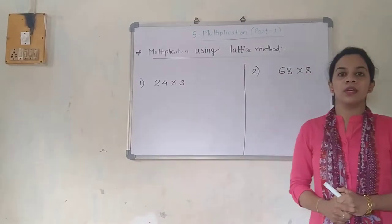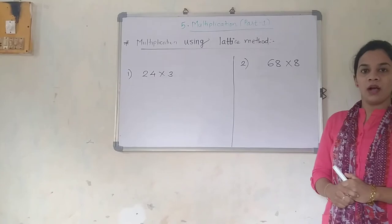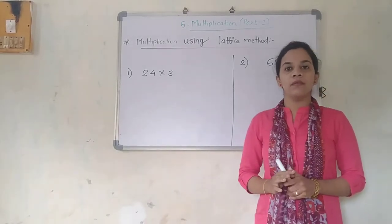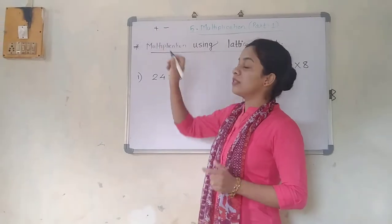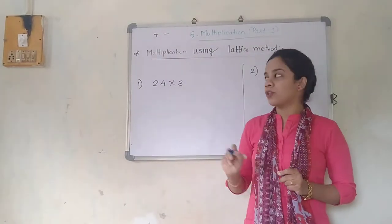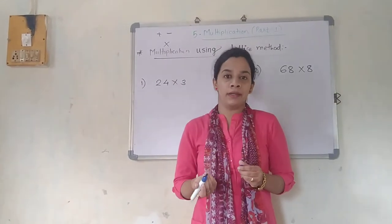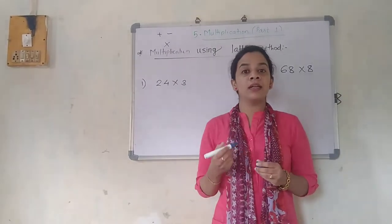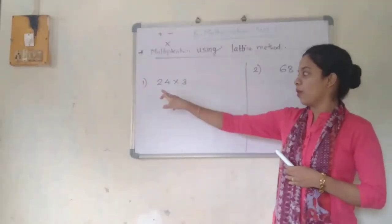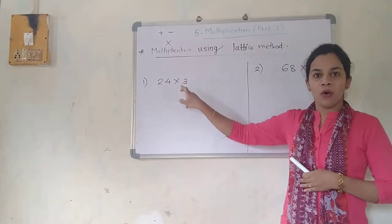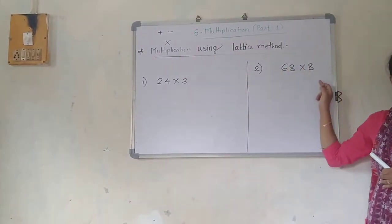They have given you two questions: 24 into 3 and 68 into 8. Now, basically for addition we were using the plus sign, for subtraction we were using the minus sign, and for multiplication we are using the cross sign. It is also said to be as 'multiply' or 'into.' So the question is 24 into 3, or 24 multiplied by 3, and 68 multiplied by 8.